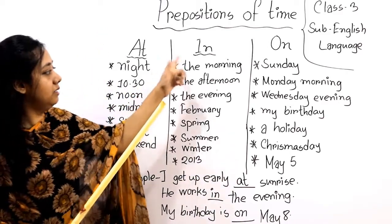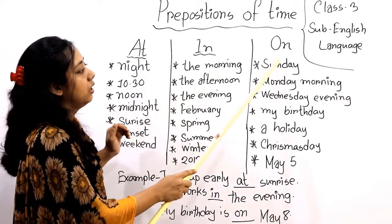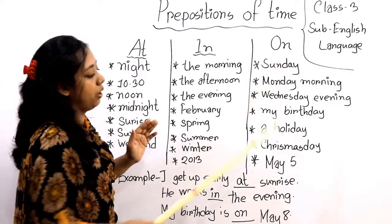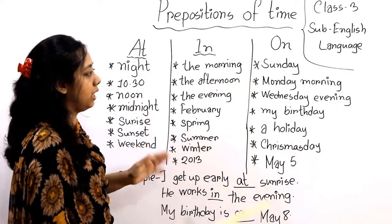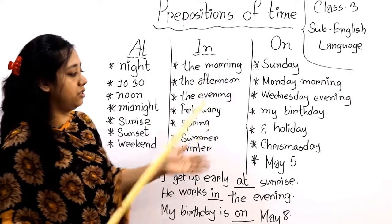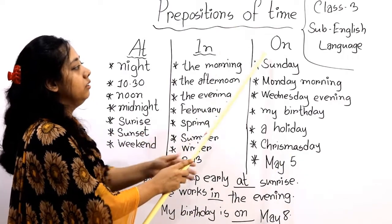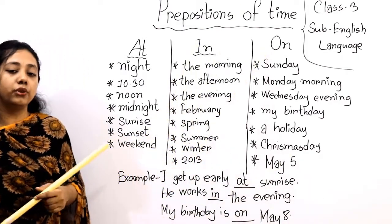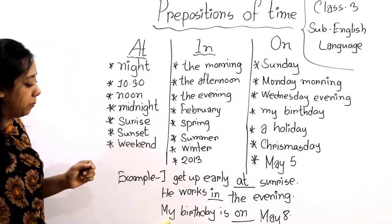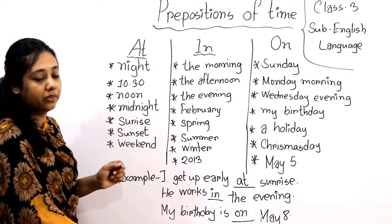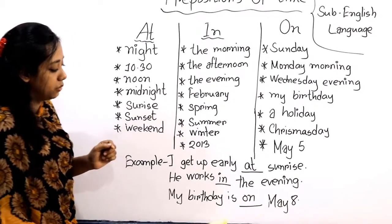'On' sits before a day or date — it's very easy to memorize. On sits only before days like Sunday, Monday, Wednesday, or special days like birthday, holiday, Christmas Day, or any date. For example: my birthday is on May 8th. This is a date, that's why 'on' sits before it.